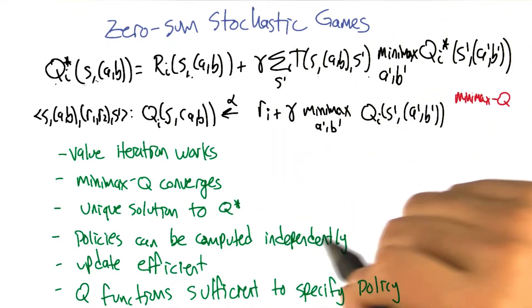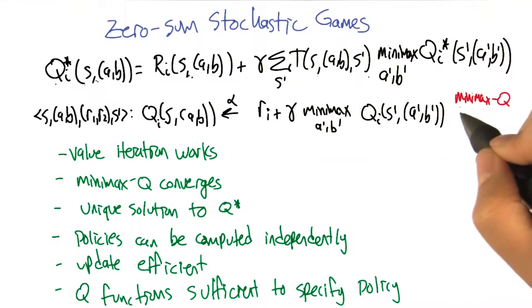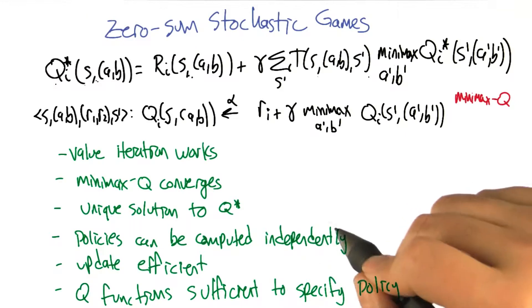The policies for the two players can be computed independently. That is to say, if two different players are running minimax Q on their own and not really coordinating with each other except for by playing the game, the policies that they get out will actually converge to minimax optimal policies.